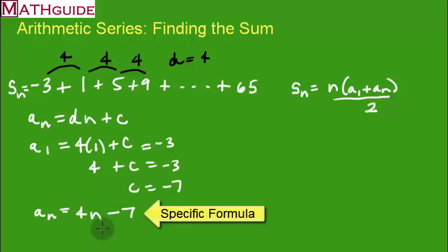This is the formula we would use to generate the sequence, or the series in this case. Well, we have our series, we just want to figure out what term this is. So we're going to set that equal to 65.